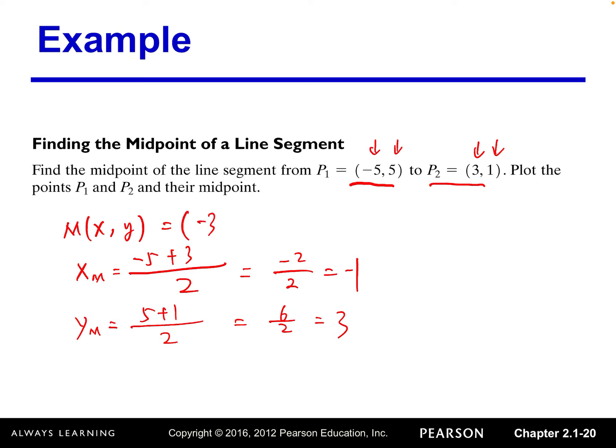That's given us 6 over 2 which equals 3. So the midpoint coordinates is negative 1, 3. Alright, let's graph it and see.